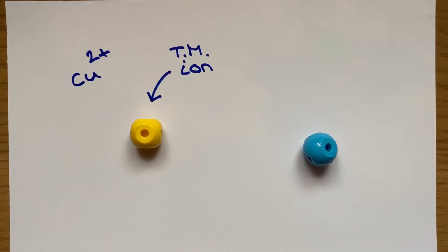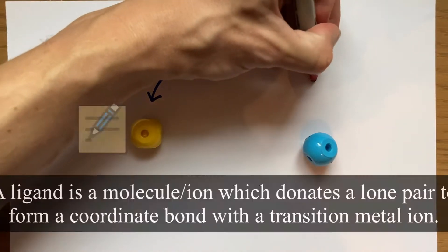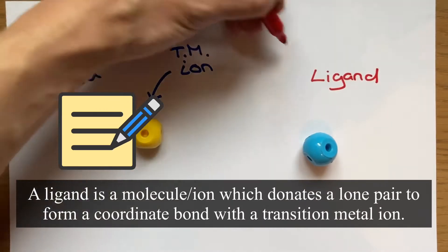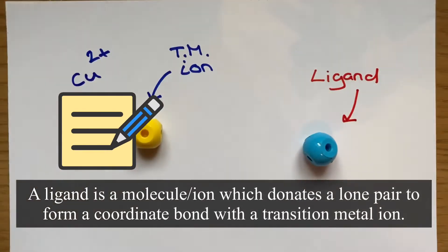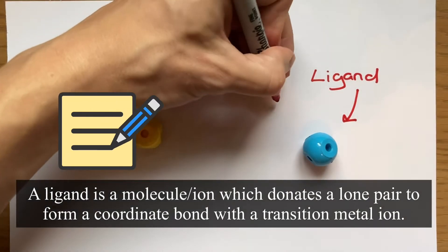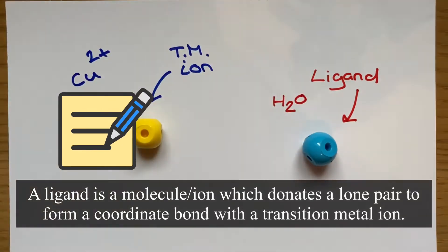These transition metal ions get surrounded by ligands and a ligand is a molecule or ion which donates a lone pair to form a coordinate bond with the transition metal ion. You might recognize coordinate bonds as dative covalent bonds from the first year of your chemistry course.